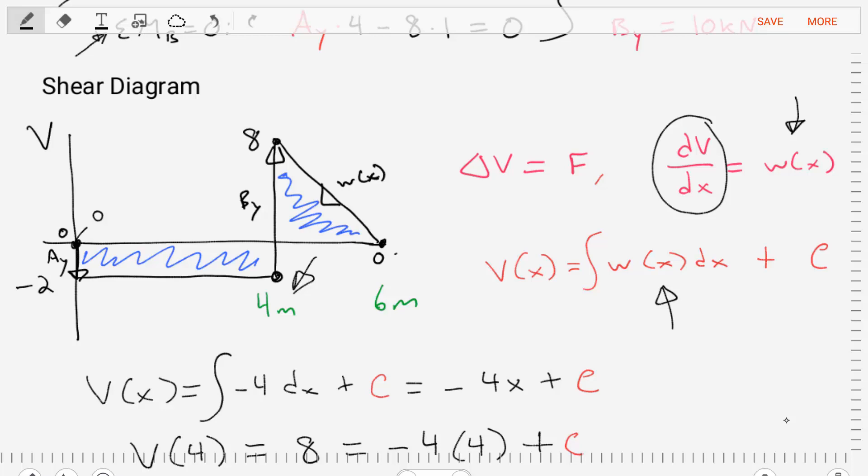So wherever we are, we know we're at 8. From 4 to 6 meters, we are going to have a slope downwards equal to that distributed load of negative 4 kN per meter. That is the slope in that region.